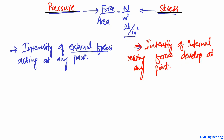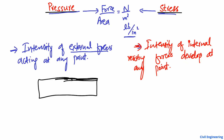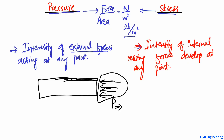I'm going to explain this with the help of an example. Consider a steel rod — a compressive load P is applied on this steel rod. The intensity of this external load acting on the surface points is known as pressure. This P, which is the force acting per unit area from outside the object, is known as pressure.